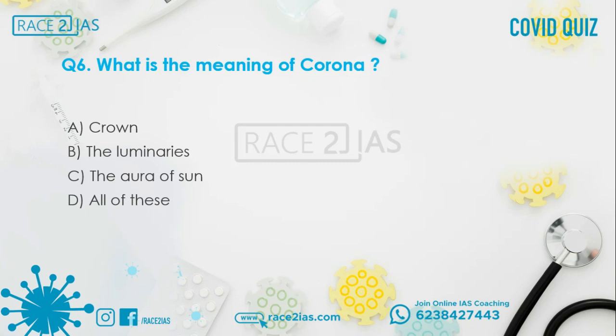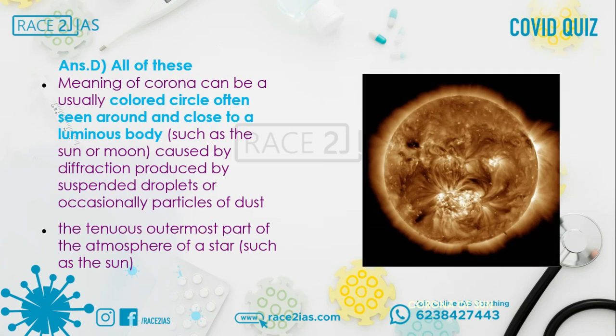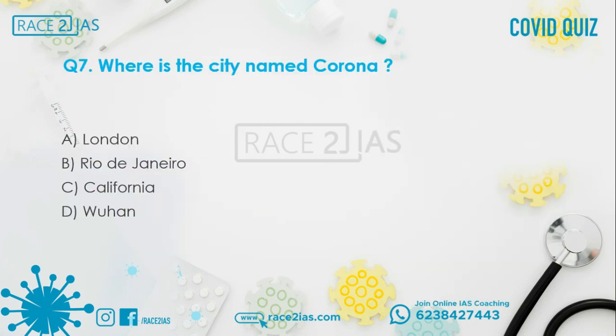Question number 6: What is the meaning of corona? Option A: A crowd. Option B: The luminaries. Option C: The aura of sun. Option D: All of these. The right answer is all of these. The meaning of corona can be a usually colored circle, often seen around a luminous body such as the sun or moon, caused by diffraction produced by suspended droplets or occasionally particles of dust.